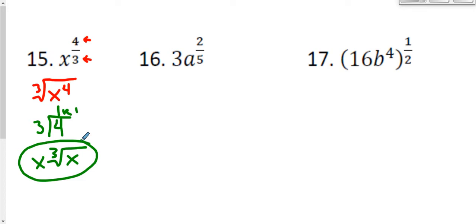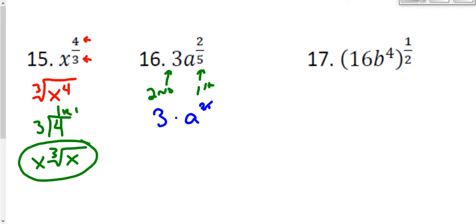For number 16, it's very important to recognize the order of operations. If I plug something in for a, the first thing I do is the exponent, and the next thing is multiplication. So because the exponent happens first, this is essentially three times a to the two-fifths power. Only the a is being raised to the two-fifths power, which means only the a will be rewritten in radical form. The three will stay on the outside.